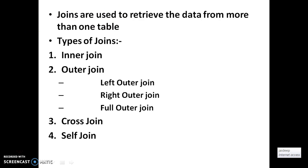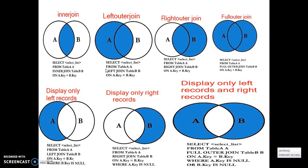Outer join is again of three types: left outer join, right outer join, and full outer join. First of all, we will discuss about inner join. I think you all are familiar with Venn diagrams, and here I want to explain joins with the help of Venn diagrams so that it is easy to understand.